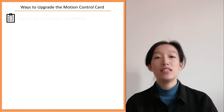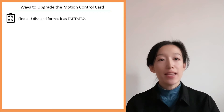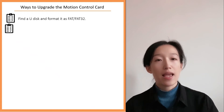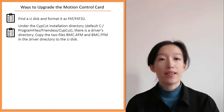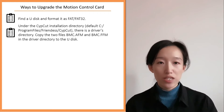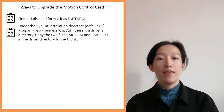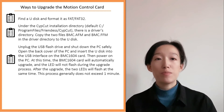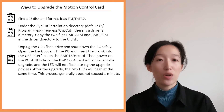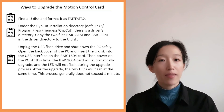Upgrading with a USB stick is a quick and effective solution. Step 1: find a USB disc and format it as FAT or FAT32. Step 2: under the SAP Cat installation directory (default: C:\Program Files\Franis\SAP Cat) there is a drivers directory — copy the two files bmc.afm and bmc.ffm from the drivers directory to the USB disc.